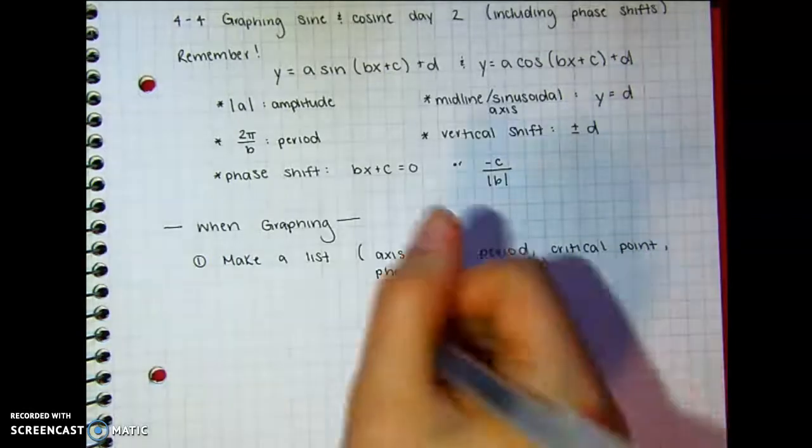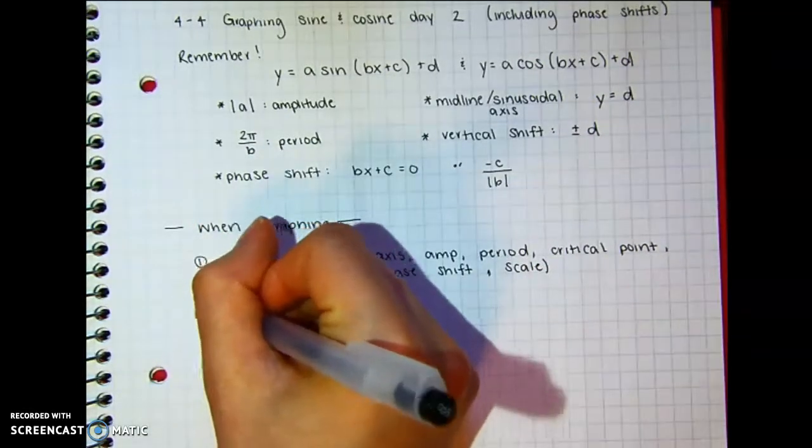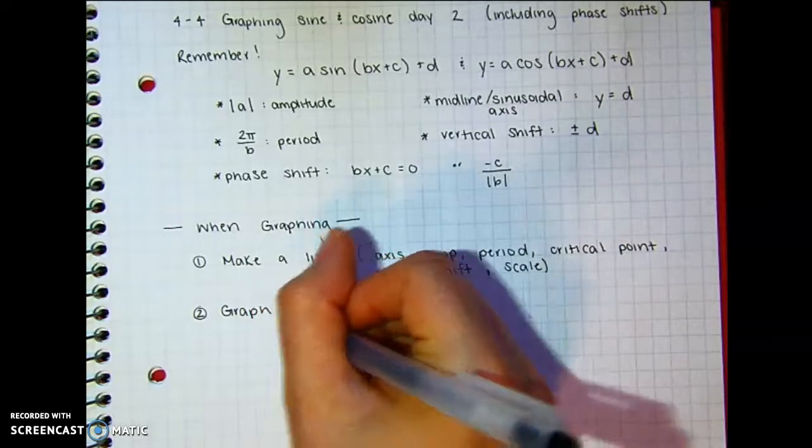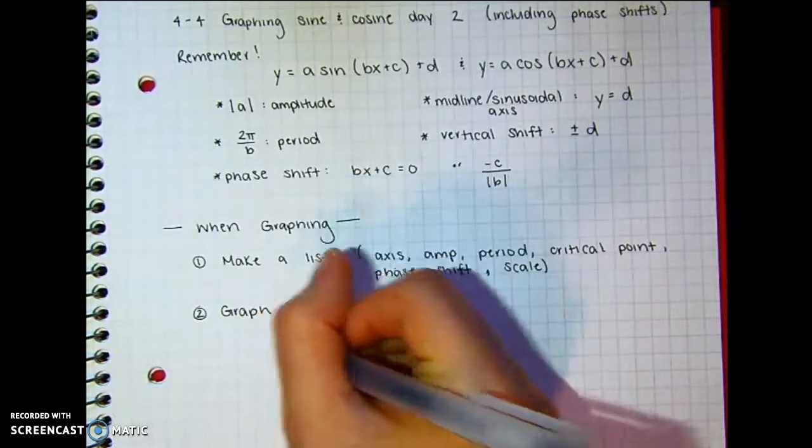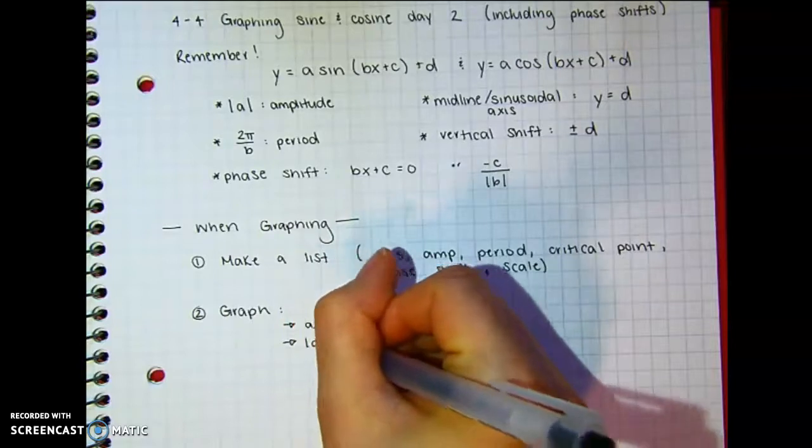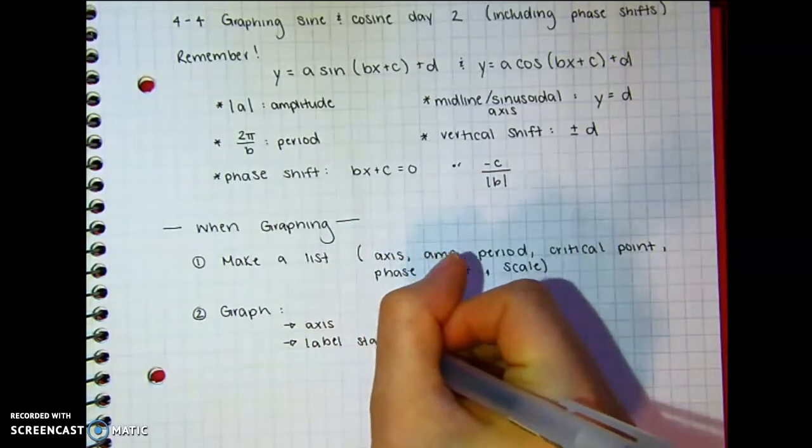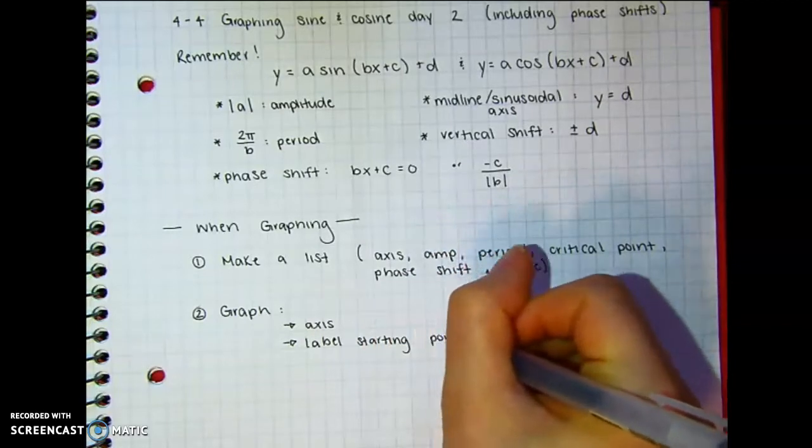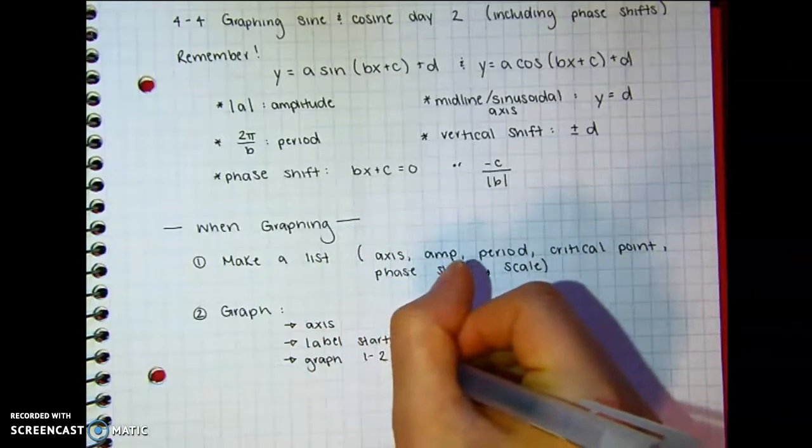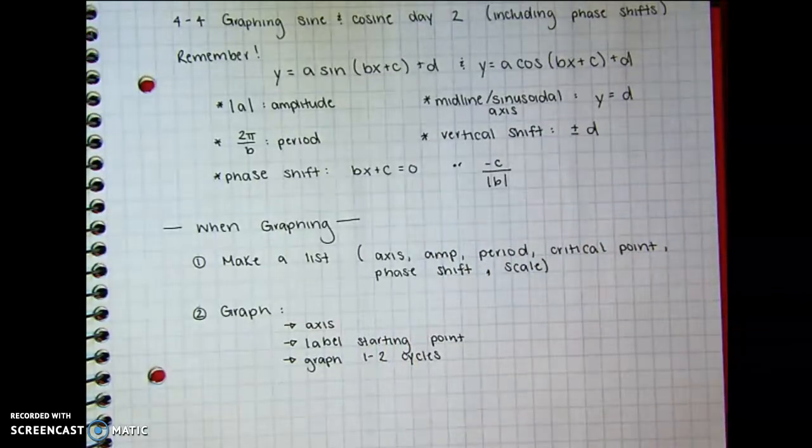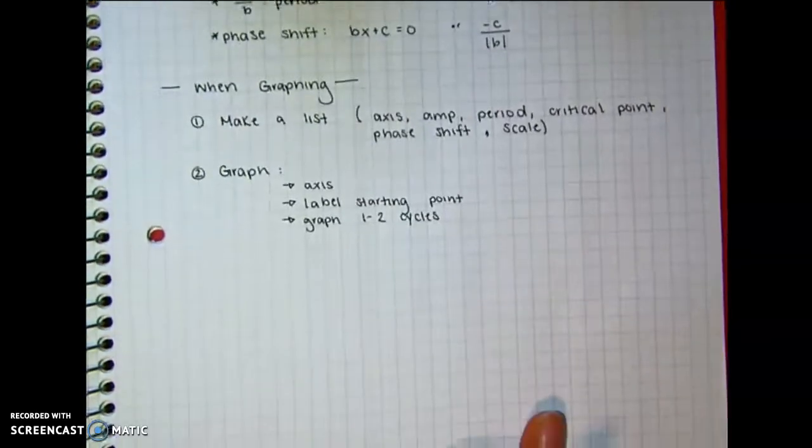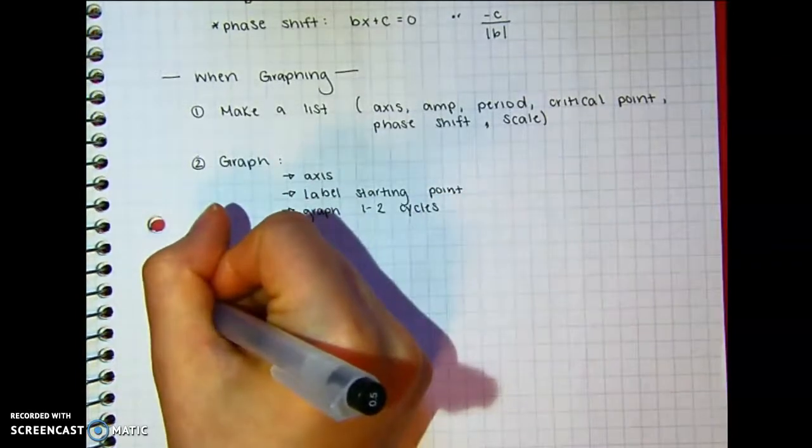Then you're going to want to graph. And I recommend starting with your axis. And then you want to label your starting point if you're doing it by hand. And then graph depending on what the directions say, one to two cycles. Always graph one cycle at the very least. And I think that that's everything. We can always go back and add to it. So let's do an example.